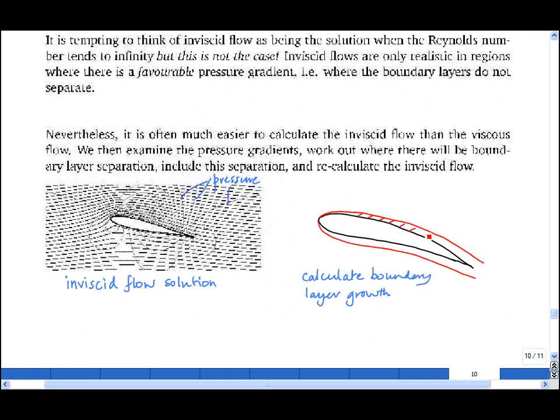We then work out the blockage caused by that boundary layer and then recalculate a new inviscid flow solution and then we keep iterating until we get convergence. Because then, by using a relatively cheap inviscid flow solver and a relatively cheap boundary layer solver, one has managed to calculate the flow around an airfoil, which would otherwise be very expensive.